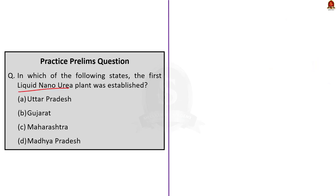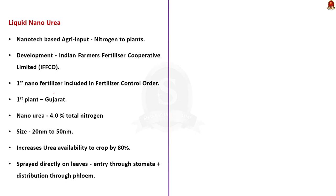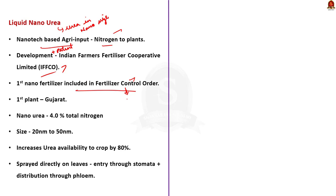The next question is about liquid nanourea. A question was asked in 2016 prelims about neem-coated urea, so you may expect a question about liquid nanourea this year. Liquid nanourea is a nanotechnology-based agri input which provides nitrogen to plants — essentially urea in nano-size. It was developed and patented by Indian Farmers Fertilizer Cooperative Limited (IFFCO). IFFCO nanourea is the first nanofertilizer approved by the government and is included in the Fertilizer Control Order, which regulates the sale, pricing, distribution, and other formalities of fertilizers in India. India's first liquid nanourea plant was set up in Gujarat.